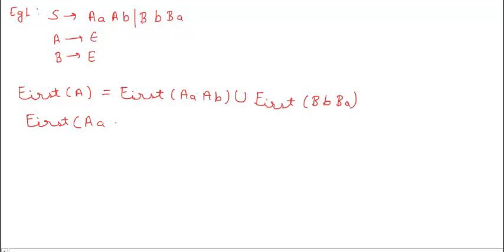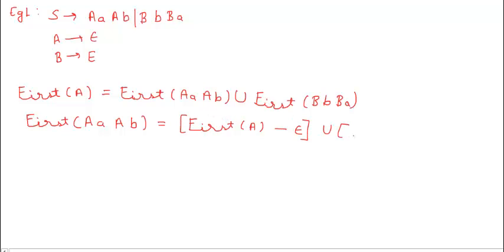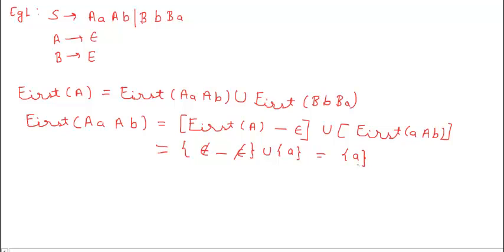Calculating FIRST(A a A b): since A produces epsilon, we minus epsilon and union it with FIRST(a A b), which gives us {a}. So FIRST of (A a A b) equals {a}.